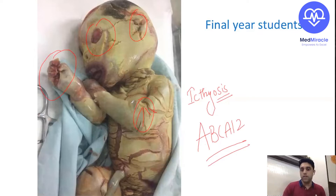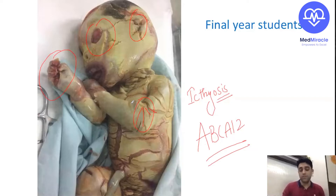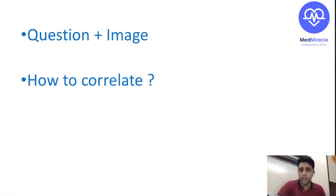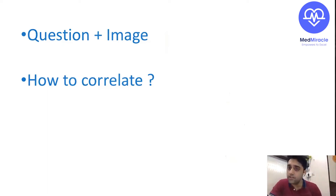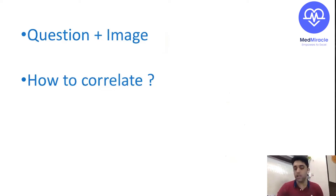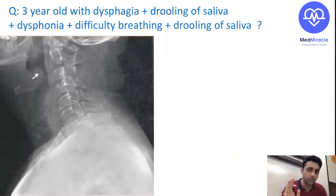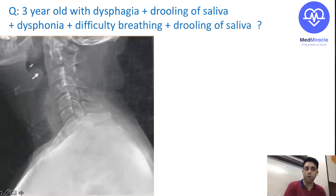Now, today's session is also about how to approach a question with an image. Many students ask: should I only read the question, or only look at the image? How should I correlate them? Point number one: some questions are spot-on diagnosis — you see the image and immediately know the answer without even reading the question. For example, this lateral radiograph showing acute epiglottitis — spot-on diagnosis. The question also tells you all five D's of epiglottitis: dysphagia, dysphonia, drooling, difficulty breathing, and drooling of saliva, with a tripod position and cherry-red epiglottis.